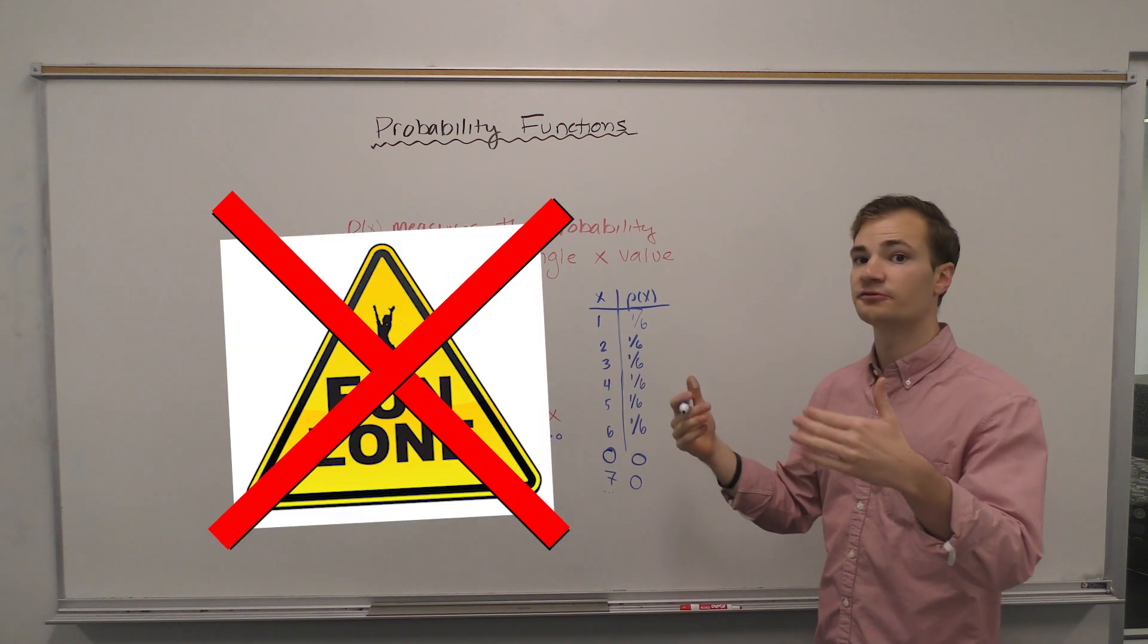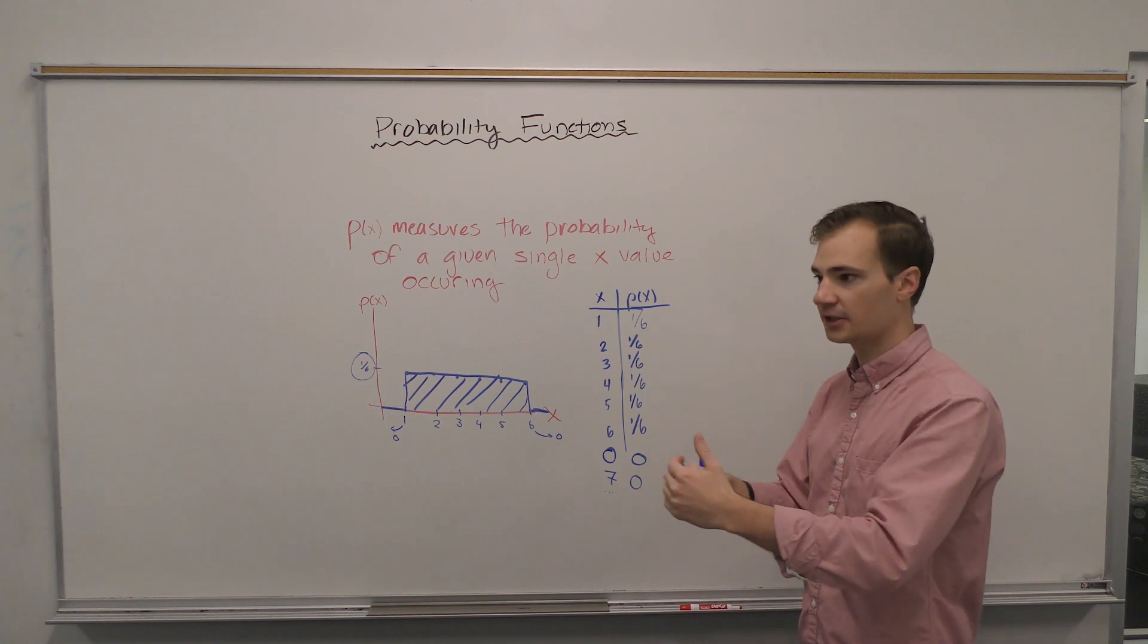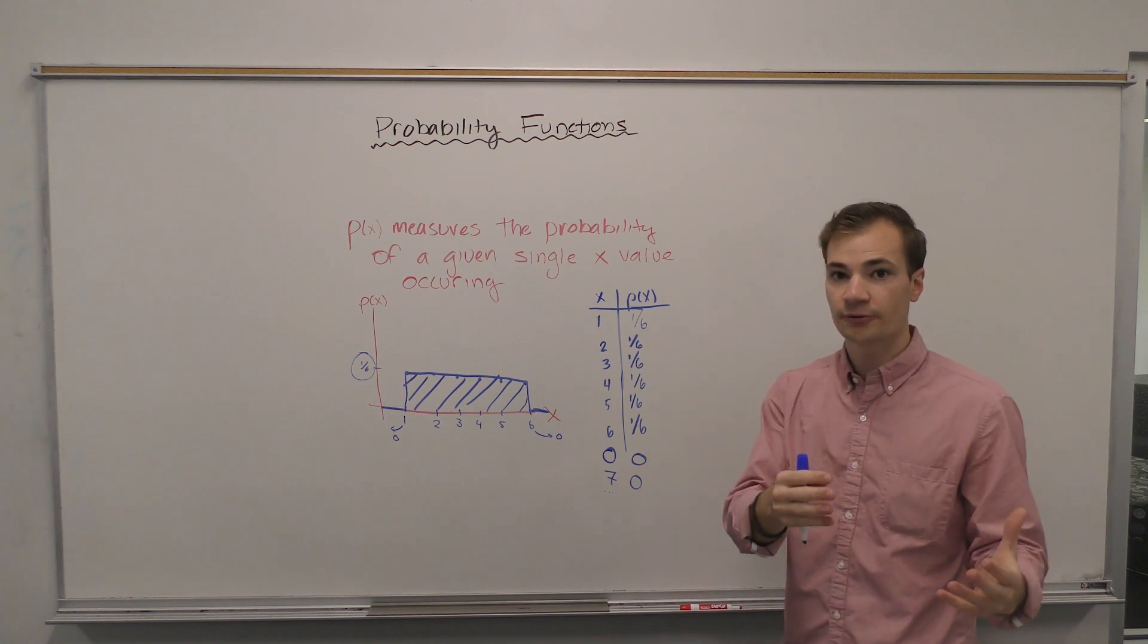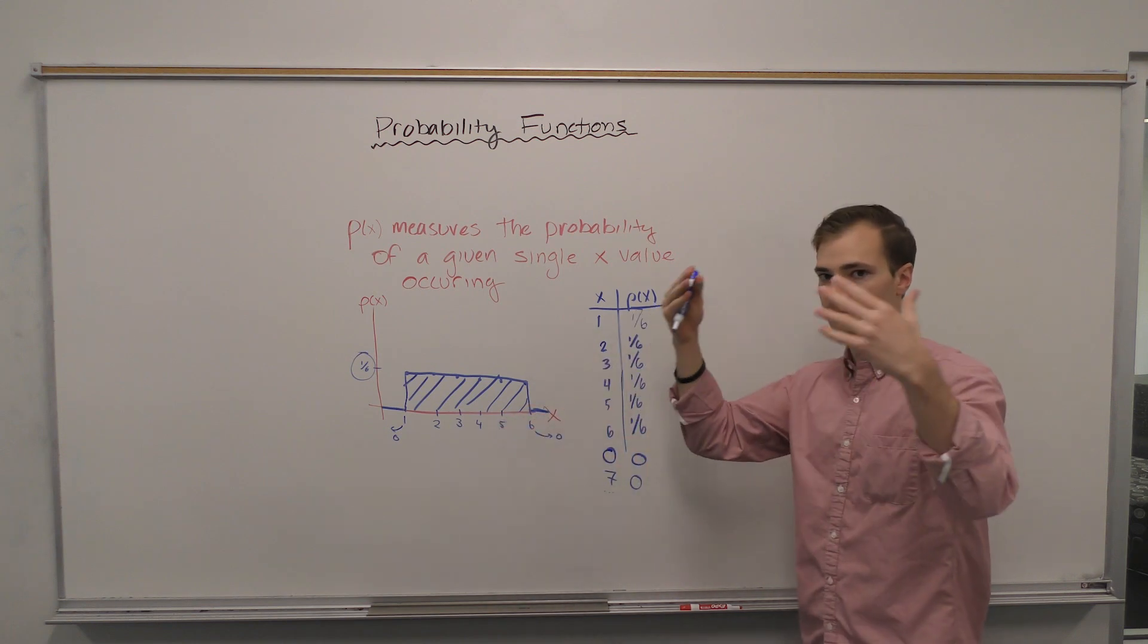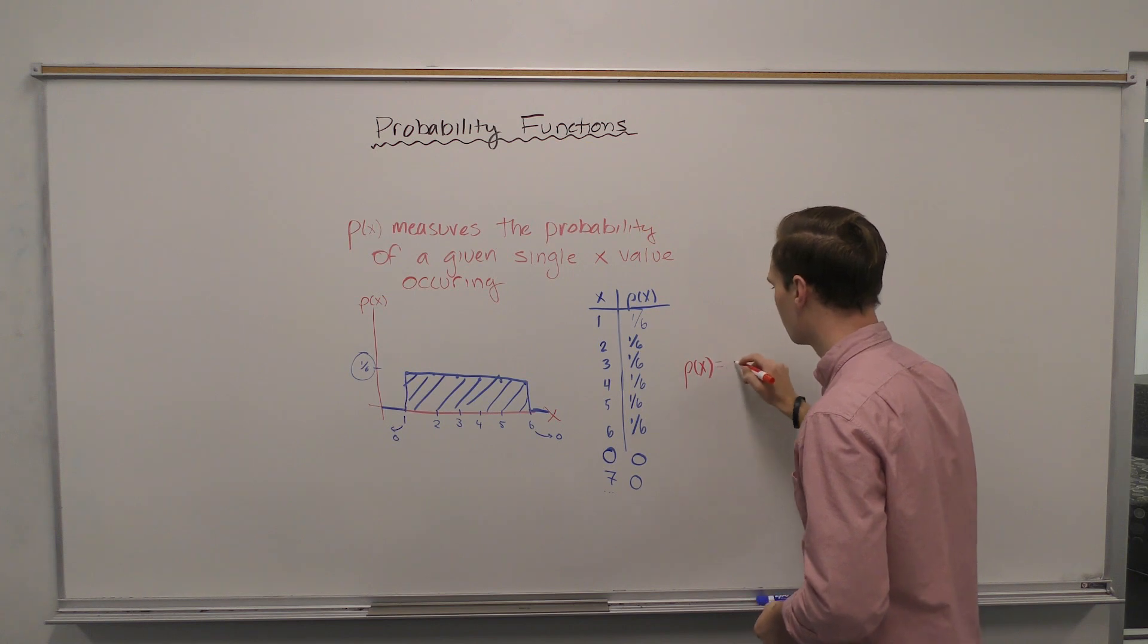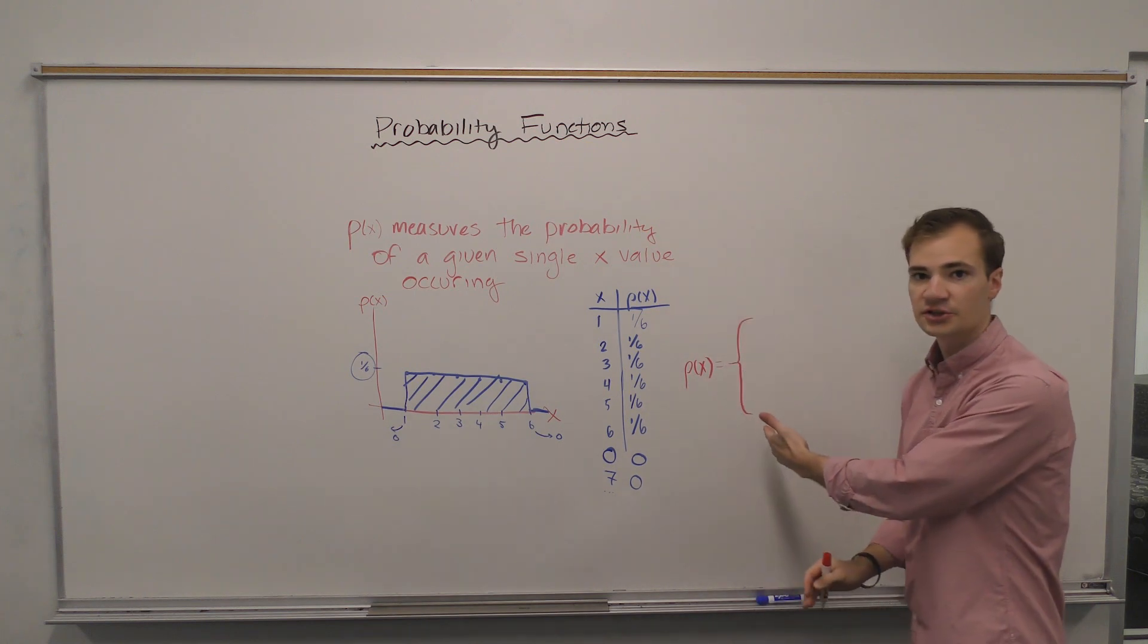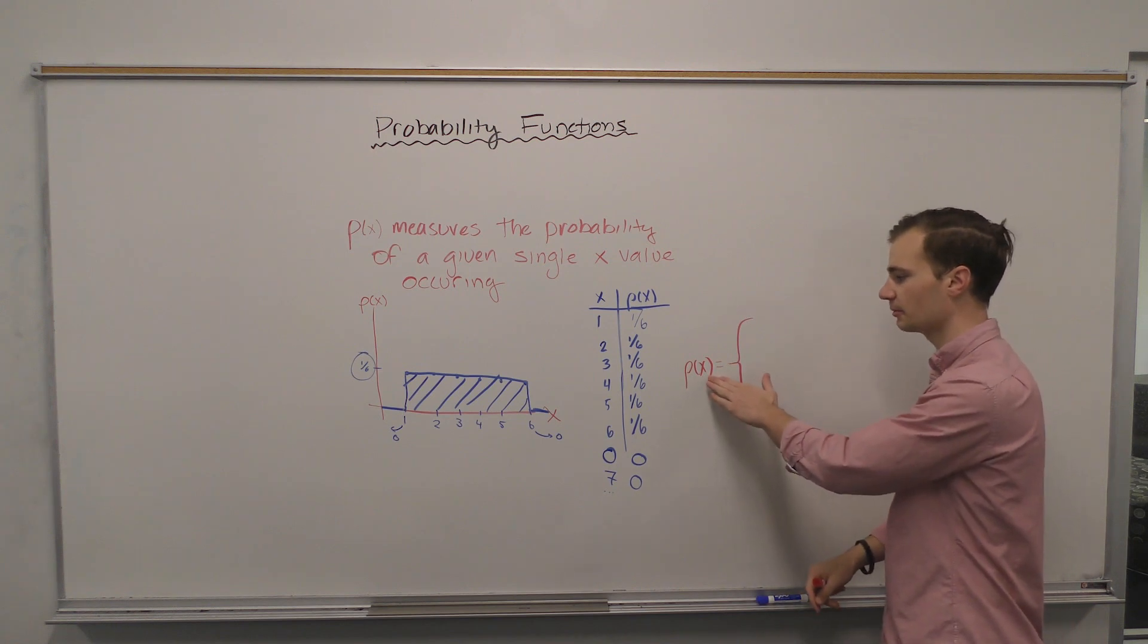Now we can do something else with this. We can take this from a graph and an input-output tree and we can create a formula for this distribution. We're going to have to reverse our thinking. Sometimes we're given a formula and we can draw a graph. Here we are given a graph and we're going to reverse our thinking and draw a formula. We draw these curly brackets to show that there are multiple items within this probability. It's not just a single formula because our domain is limited.